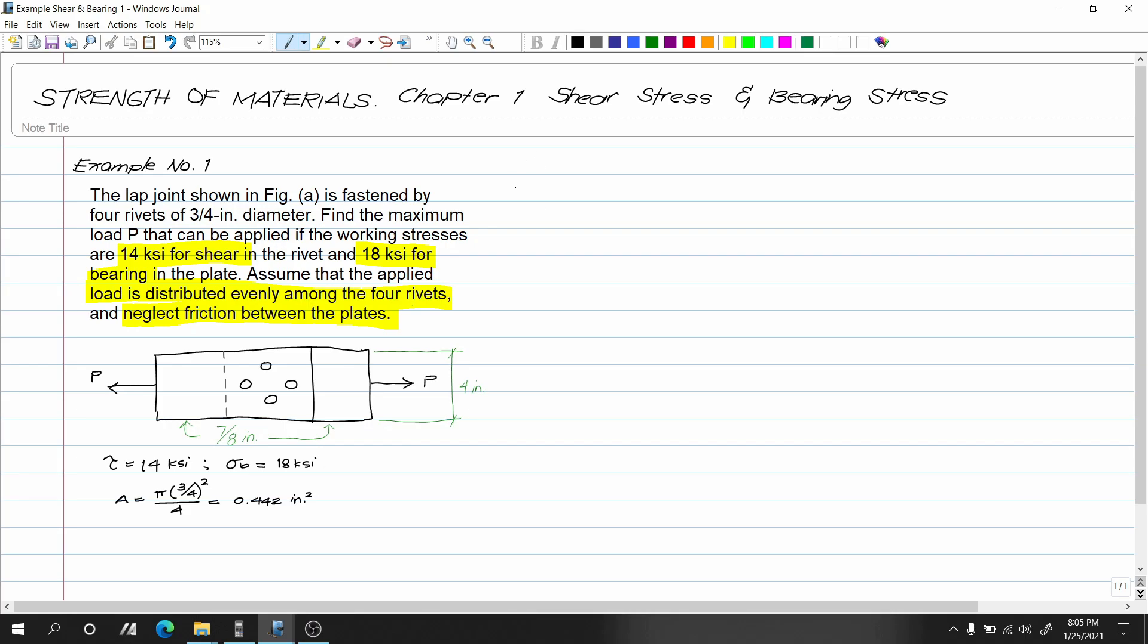We have two conditions: shear and bearing stress. Letter A: From shear stress. The shear stress in our connection is V/A. However, the problem states that the applied load is distributed evenly among the four rivets, which means we have four shear surfaces.